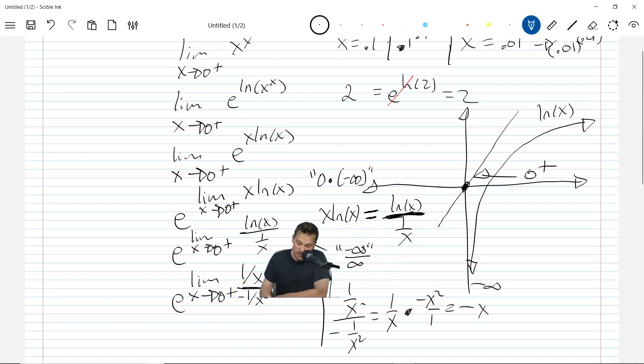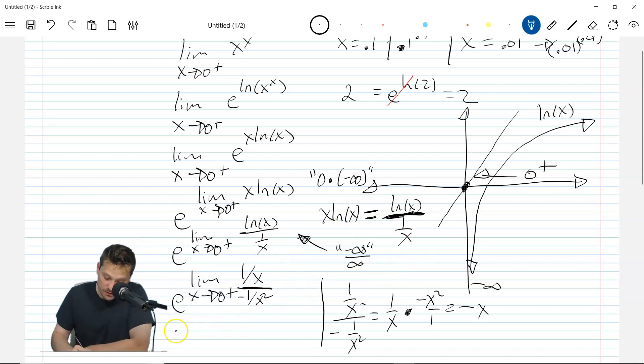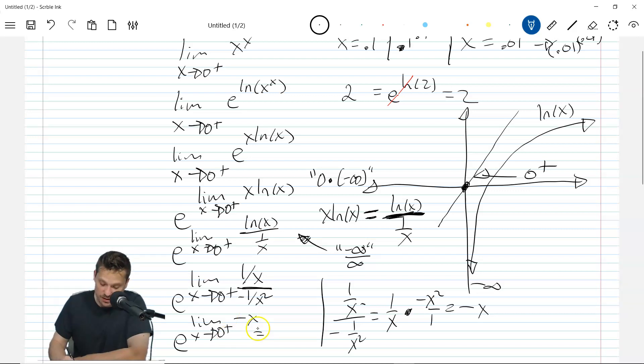Then you just plug that into the exponent. So I'm going to have e to the limit as x approaches 0 from the right. Now at this point, you can just replace x with 0 directly. So you end up with e to the 0, which is 1. And this here is officially the value of the limit done in great detail right here. That's our answer, positive 1.